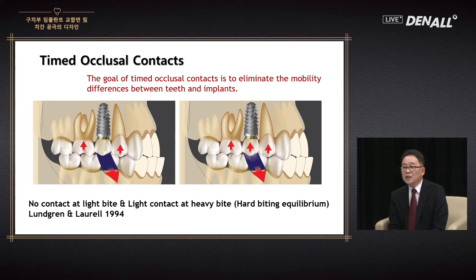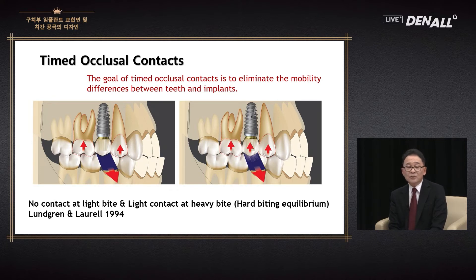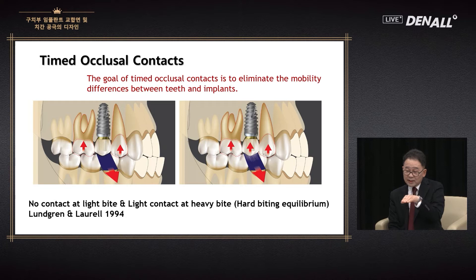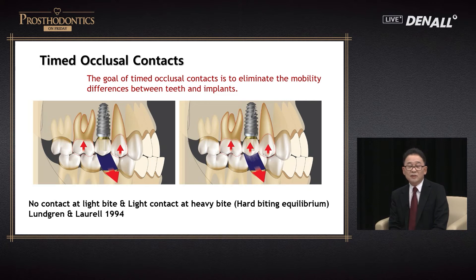Timed occlusal contact means: under light contact, Shim stock should be able to be removed. Under hard bite — hard biting equilibrium — under heavy bite, you should not be able to remove the Shim stock. We tend to focus on the axial movement, but that causes contact problems slowly, so it is not easy to resolve it with a point of contact. The principle and concept need to be understood, and that will help when you try to figure out problems.